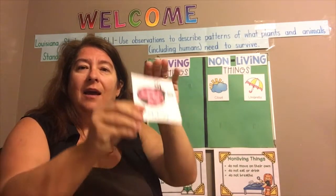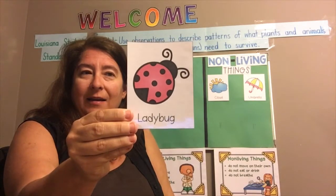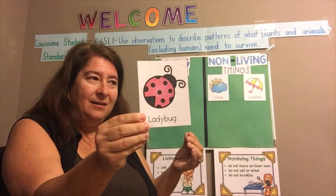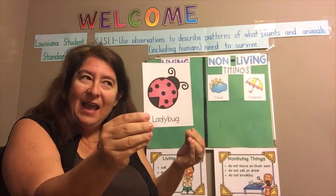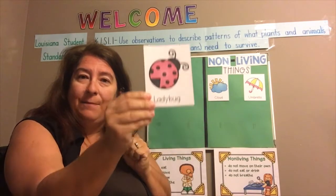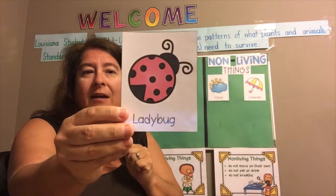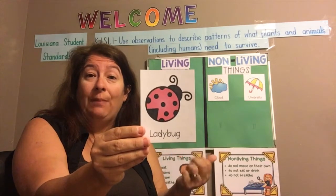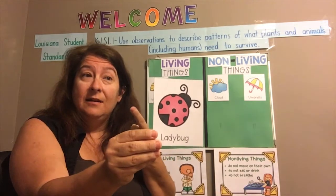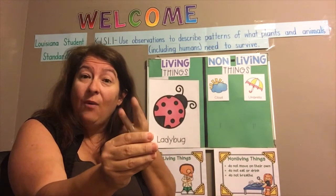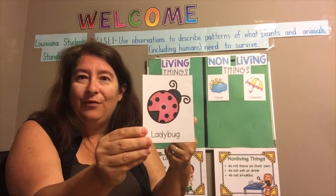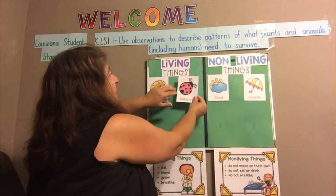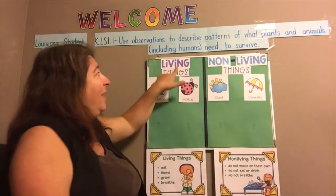Let's look at another one — a ladybug. I know that bugs start out as an egg, then the larva hatches, and then it grows and changes until it becomes the adult insect. In order to do that, insects have to eat, they have to breathe, and they grow and change. Also, insects move because I see them crawling and flying. So any insect must be a living thing, and I'm going to put it on the living thing side.